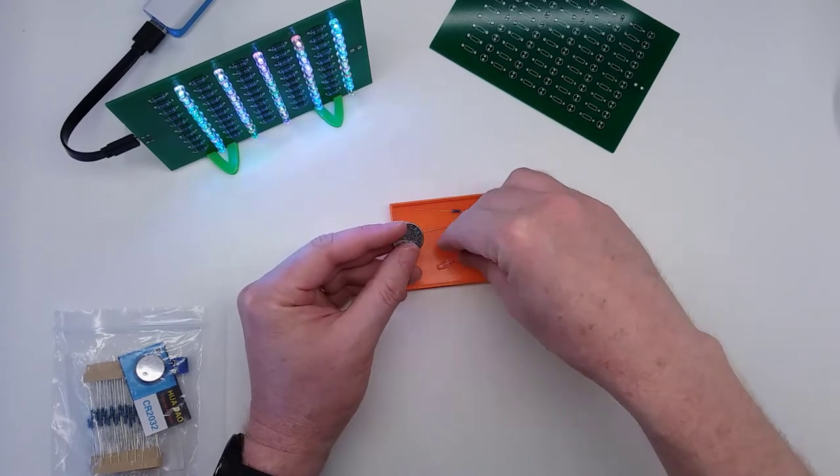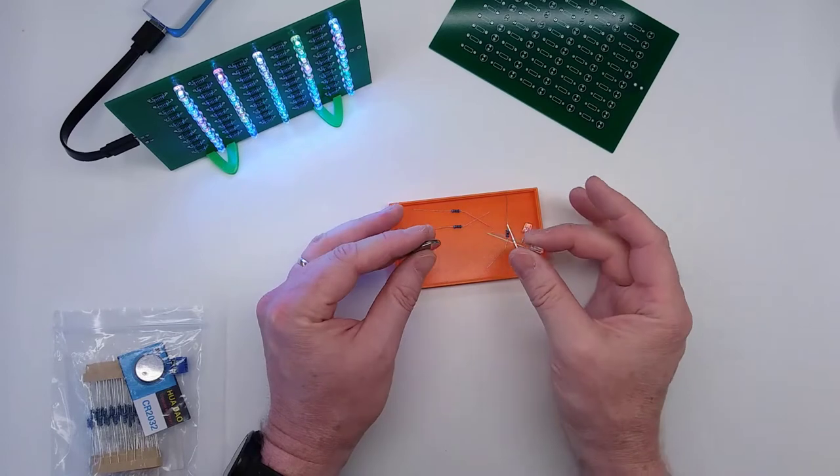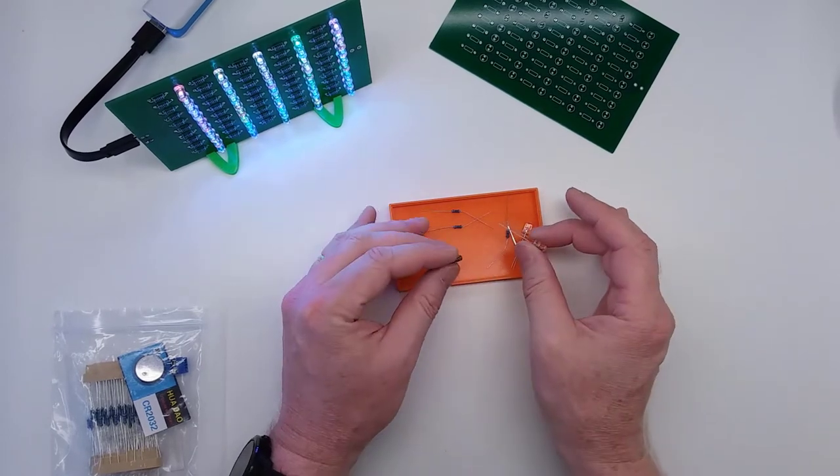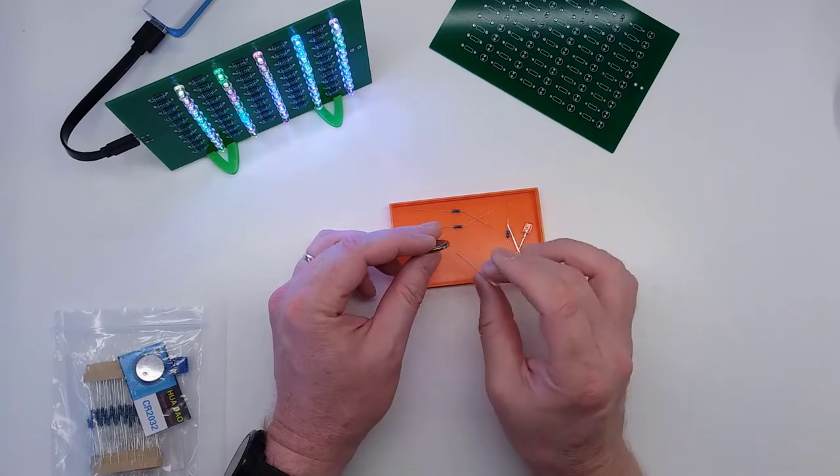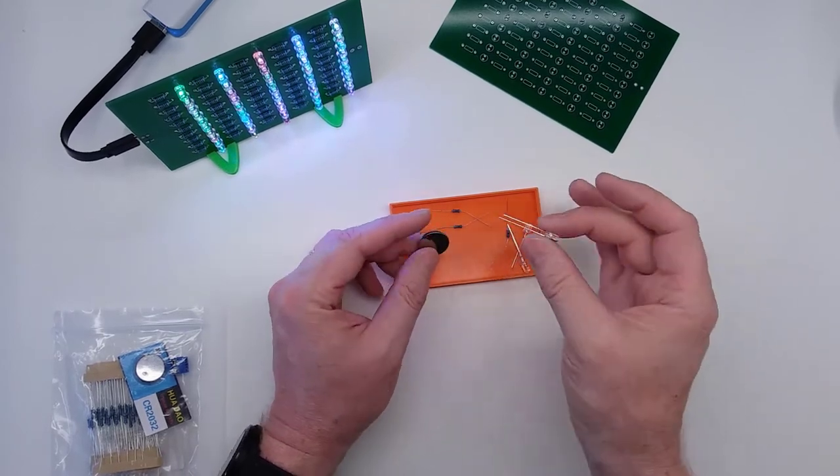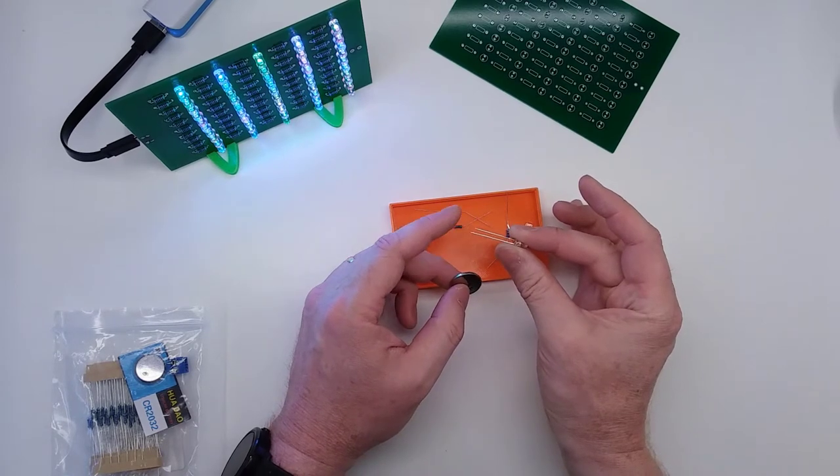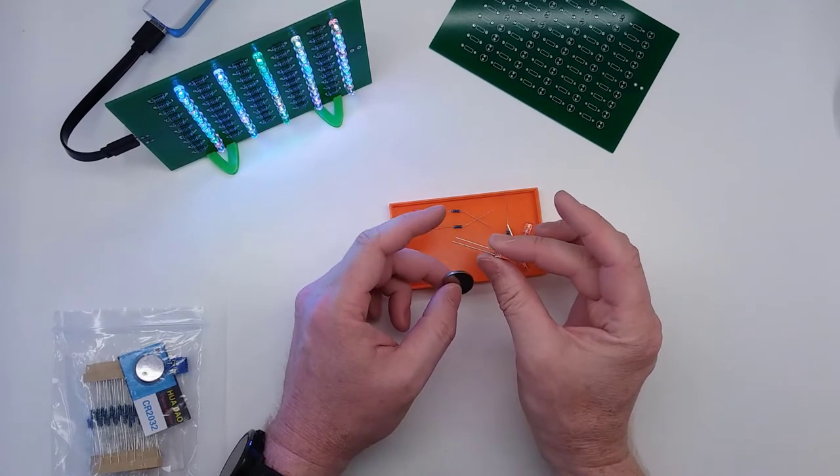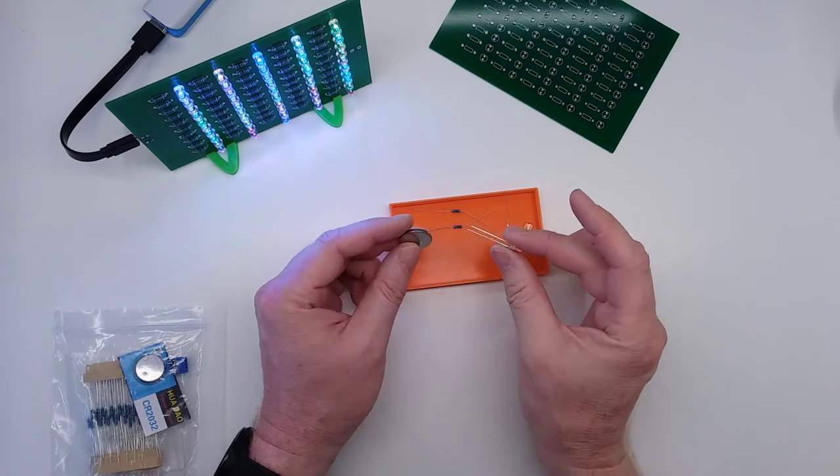Here's the battery. The reason I included the battery is so that you could test the LEDs before you solder them in. The worst thing that can happen is you get a bad LED and I wasn't able to test each and every one of these LEDs, which is why I included a couple extras. Now these LEDs do matter which direction they go in. There's going to be a long lead and a short lead. The long lead is going to be the positive and the short lead is going to be the negative.